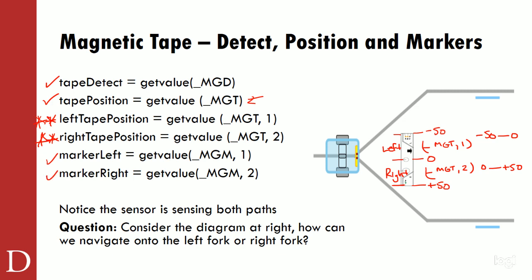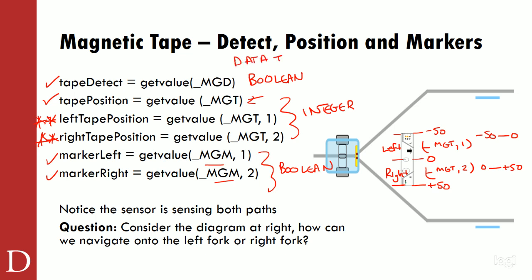Marker left and marker right — we get value MGM1 and MGM2. These are Boolean values. The tape detect is also Boolean. The three values in the middle — tape position and the two halves — are all integers: negative 50 to positive 50, or negative 50 to zero, or zero to 50. Marker left and marker right just tell me if I detected a reverse polarity magnetic strip — again, that's a Boolean, true or false.